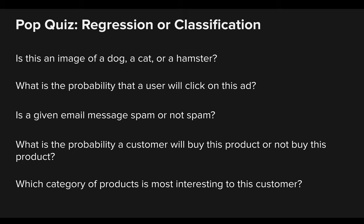Let's do a quick quiz on whether something is regression or classification. For the first question: given an image, is it a cat, a dog, or a hamster? We're given an image and trying to predict whether it's one of three animal categories. There's no quantitative or numerical or continuous measure for this — so this is an example of a classification problem. We're classifying what type of animal.